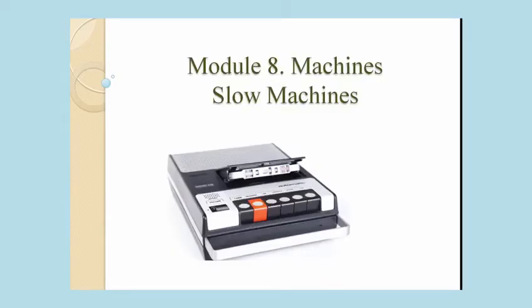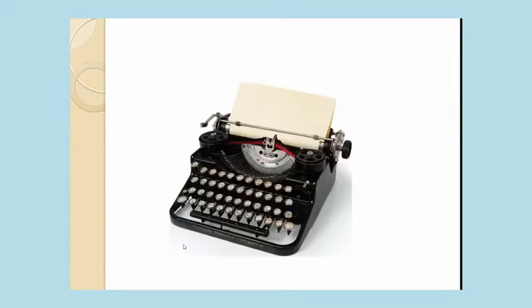As you remember, in the last lesson we took the same slow machines. Now, what is it? It's a cassette player. What is it? It is a typewriter.